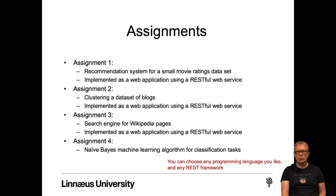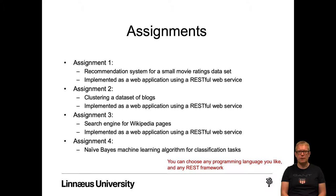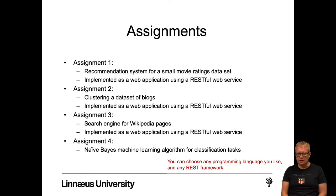In Assignment 1 you are to build a recommendation system for a small movie ratings dataset, implemented as a web application using a RESTful web service as back-end and a browser client GUI as front-end. In Assignment 2 you should do some clustering on a dataset of blogs, also implemented as a web application. In Assignment 3 you shall build a search engine for Wikipedia pages, also as a web application. In Assignment 4 you should implement the Naive Bayes machine learning algorithm for classification tasks. You can choose any programming language and any REST framework you like.